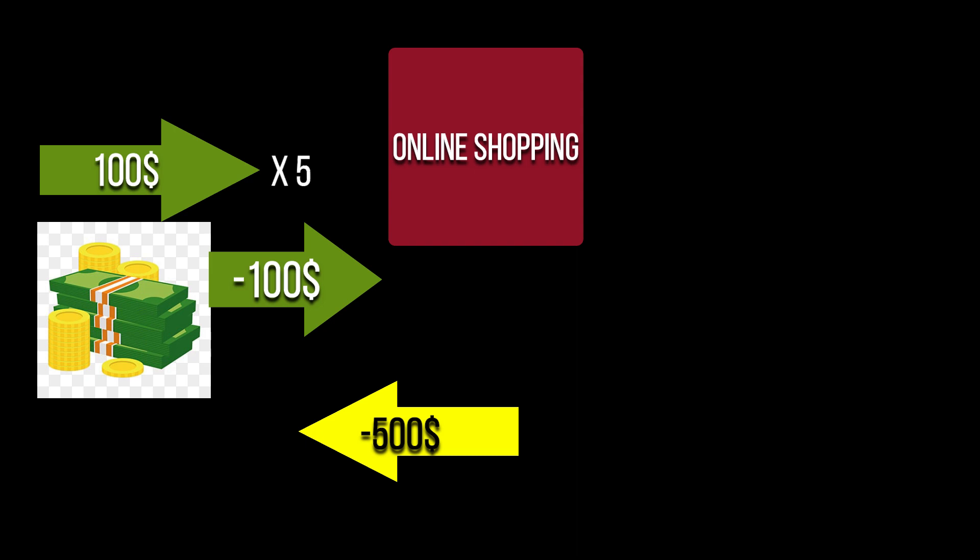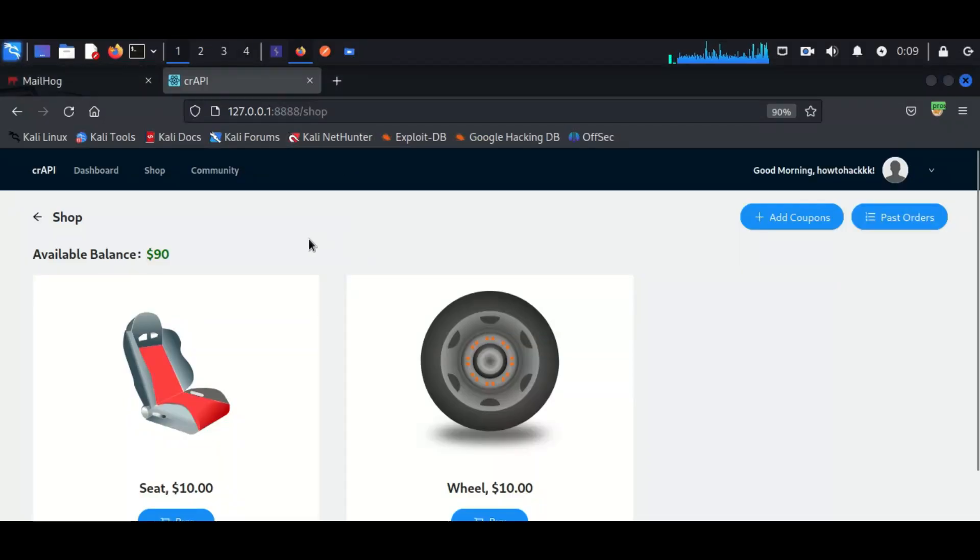When you buy this product, instead of spending money you will get money returned to your wallet — you get 500 bucks back into your account and you also receive the product. This occurs due to a business logic vulnerability: the site is accepting negative values, and during the transaction instead of sending money to the seller, money comes back to your account.